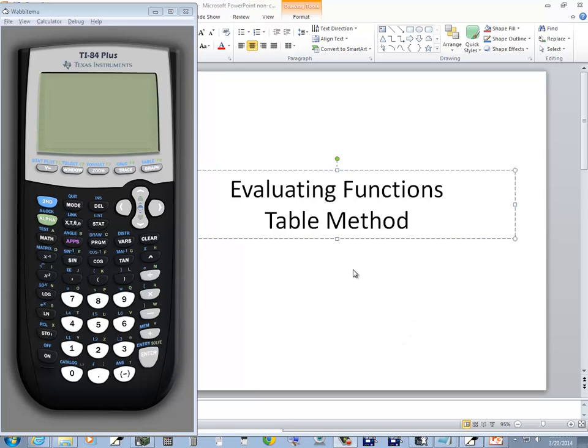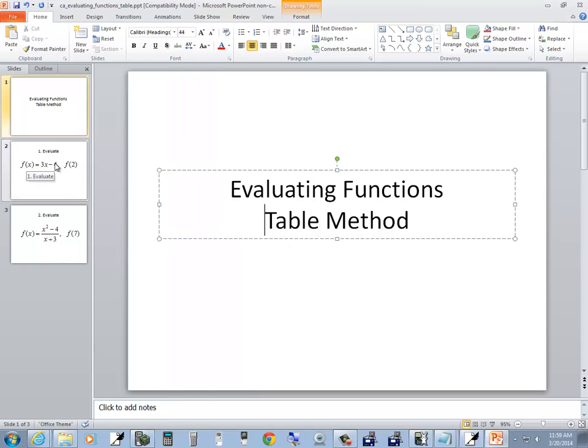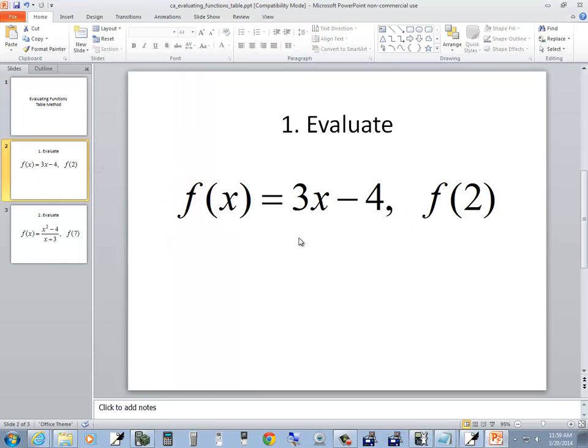Let's take a look at evaluating functions using a table method on a TI-84 Plus calculator. First one we'll take a look at is f of x equals 3x minus 4, and we want to find f of 2.